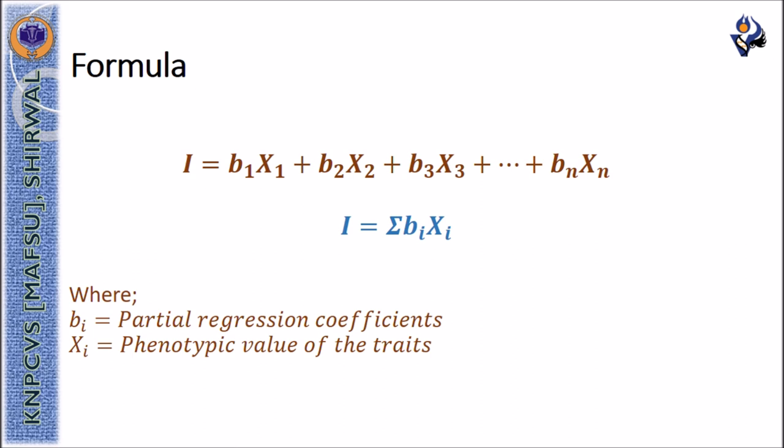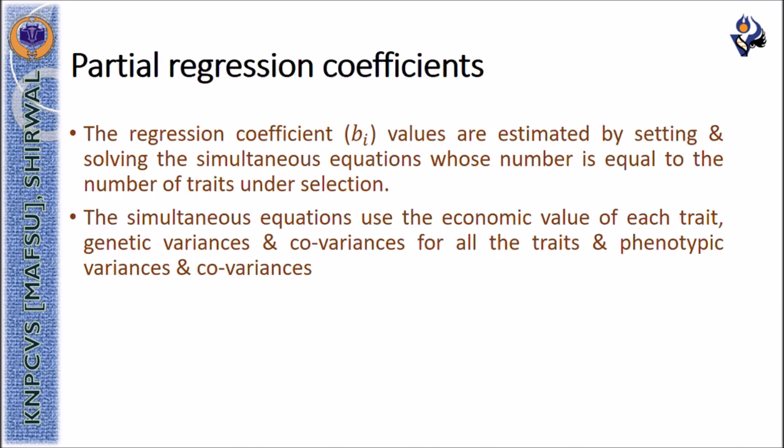plus b3x3 plus up to bnxn, where bi is the partial regression coefficient and xi is the phenotypic value of the given traits. The partial regression coefficients are estimated by setting and solving the simultaneous equations whose number